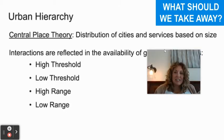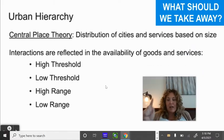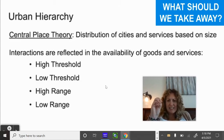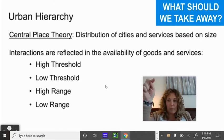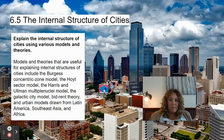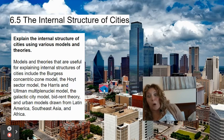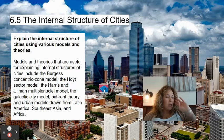Central place theory: the idea with the hexagons is that you have a central business district — a market in the center — and then how far does that market's influence extend until you find another market serving another group of places. It all depends on threshold and range to determine how many market centers there are and how big the central place being served is.